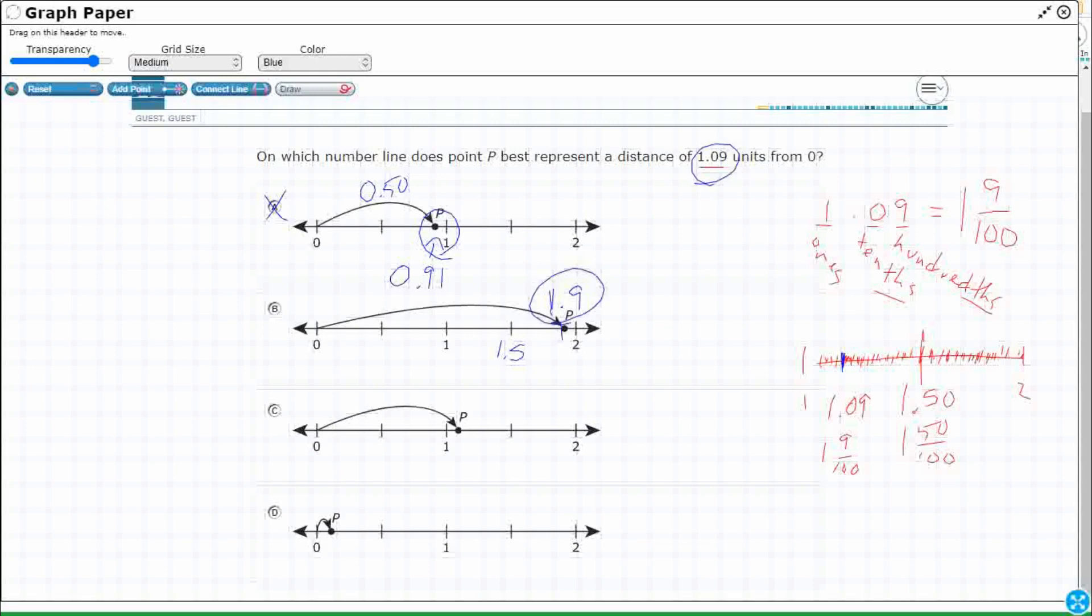So this is 1.9 or 1 and 9 tenths. Notice the difference. It's just a place value, but it's going to really move it. So this one's incorrect because it's showing 1 and 9 tenths. 9 tenths is almost 10 tenths, which is almost the next whole. And we want something closer to 1, right?